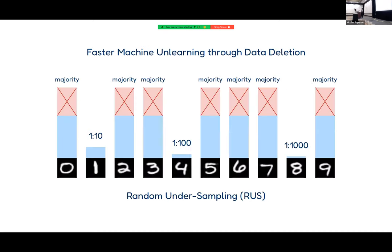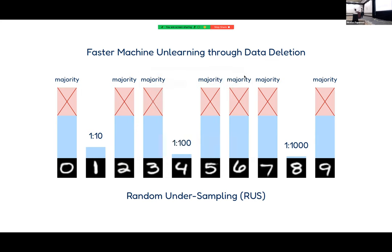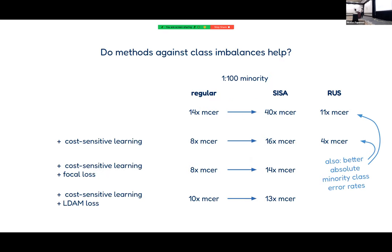But SISA isn't the only way to achieve a retraining time speedup — you can also make retraining faster by simply making the dataset smaller. One such method is random undersampling, which also helps against class imbalance: instead of removing samples at random, you remove samples of the majority class. It turns out that to achieve a speedup equivalent to a SISA model with S shards, you need to train on a dataset of size 1/√S. For our example with three shards, this means removing about 40% of the dataset.